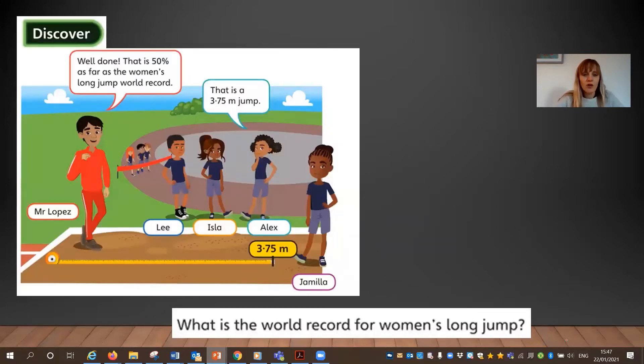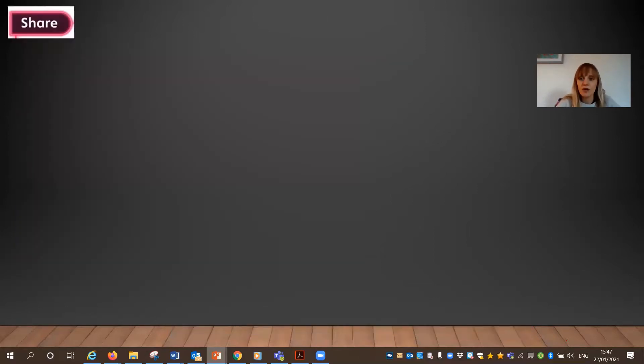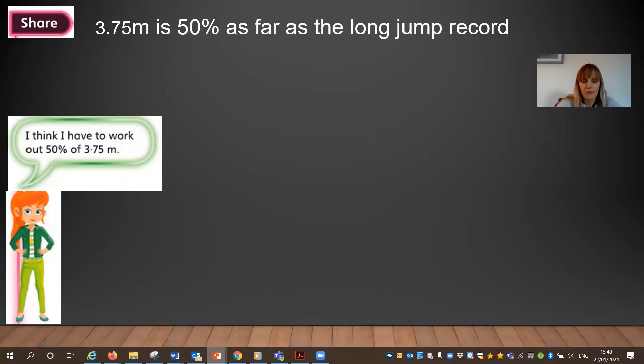So let's see and discover. So we've got here some children doing some athletics and they're doing the long jump. Now Jamila has just had a go and she has jumped a big long jump of 3.75 metres. Now her teacher says well done, that's 50% as far as the woman's long jump world record. Now that means she hasn't jumped as far, she's jumped 50% as far. Now the question at the bottom is saying what is the world record then for women's long jump? Let's have a look how we would calculate that.